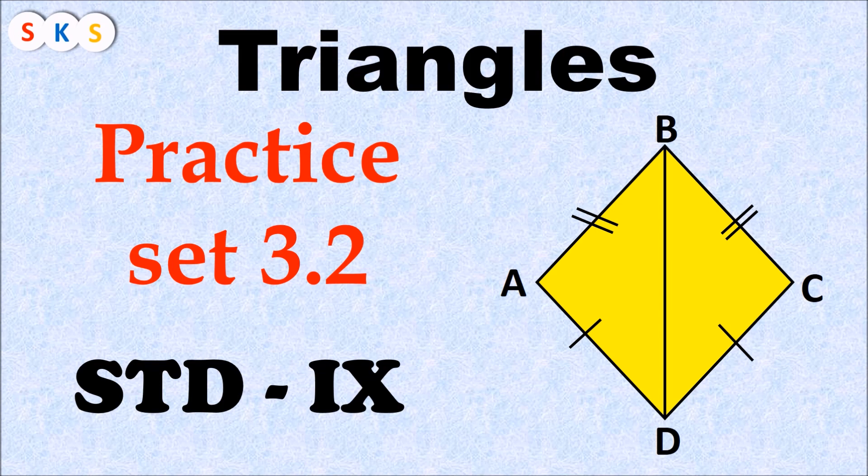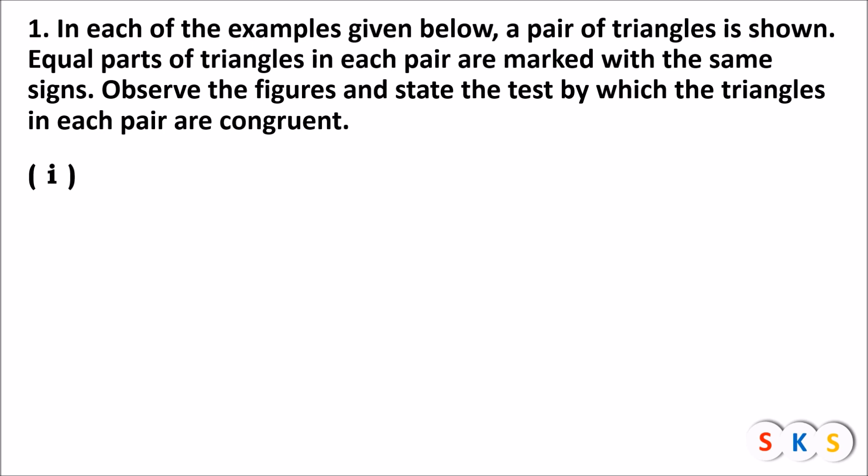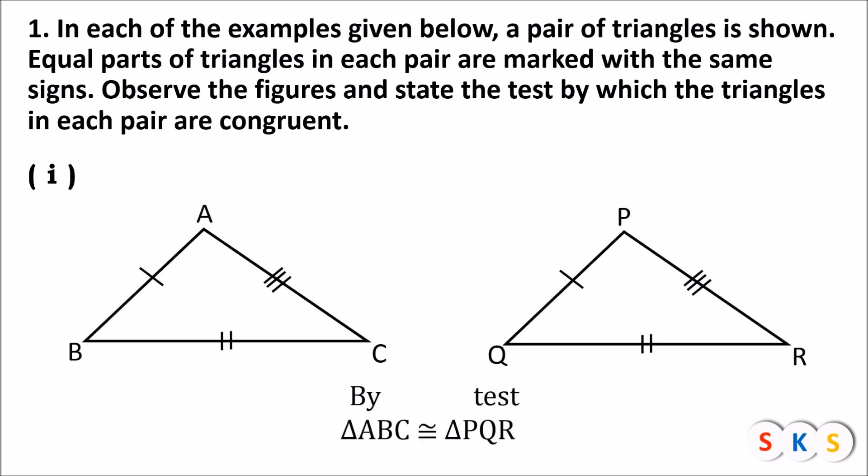In this video we will learn Chapter 3 - Triangles, Practice 3.2. Here we have question number one: in each of the examples given below, a pair of triangles is shown. Equal parts of triangles in each pair are marked with the same sign. Observe the figures and state the test by which triangles in each pair are congruent.